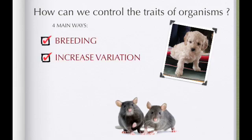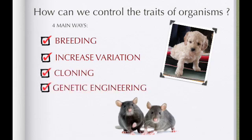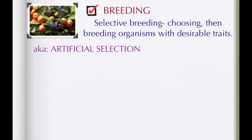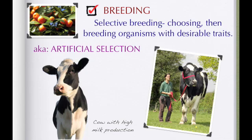There was breeding, increasing variation in the organism, we can clone the organism, and we can also mess with their genes — genetic engineering. Now let's start with breeding. If you want an organism to look a certain way or have certain traits, you do what's called selective breeding. That means you choose and then breed those organisms with the traits that you desire. It's also known as artificial selection. The example we used in class is if you had a farm with cows with high milk production, you would keep mating those cows to continue the trait of lots of milk.